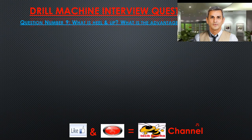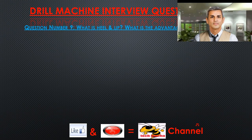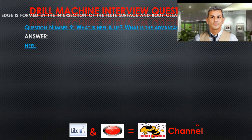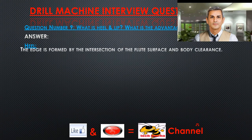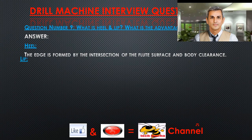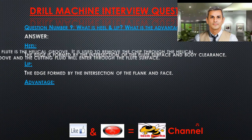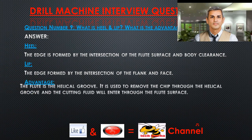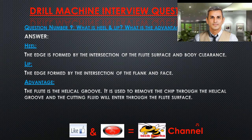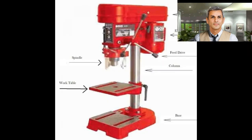Question number nine: What is heel and lip? What is the advantage of flute? Answer. Heel: The edge formed by the intersection of the flute surface and body clearance. Lip: The edge formed by the intersection of the flank and face. Advantage of flute: The flute is a helical groove. It is used to remove chips through the helical groove, and the cutting fluid will enter through the flute surface.